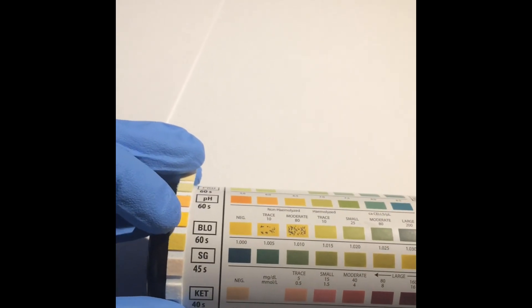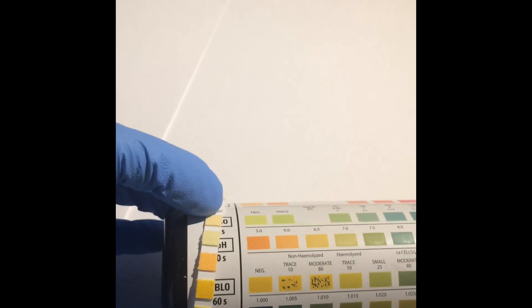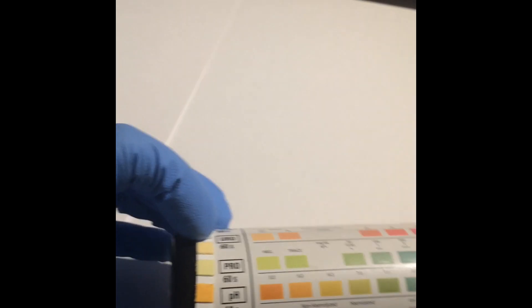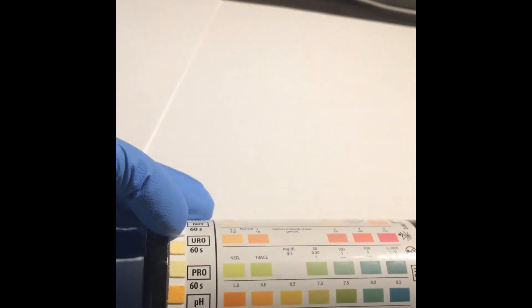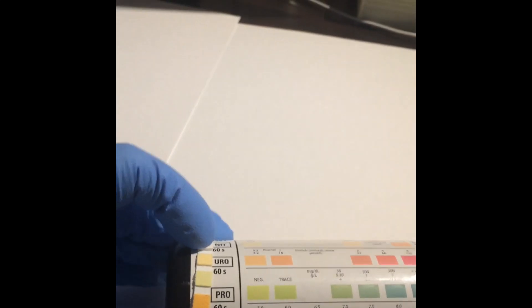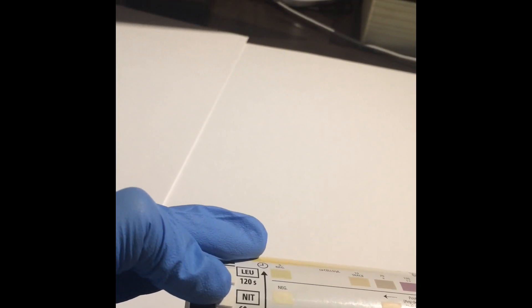Ketones at 40 seconds, specific gravity at 45 seconds, blood at 60 seconds, pH at 60 seconds, protein, urobilinogen, nitrite at 60 seconds, and leukocytes at 120 seconds.